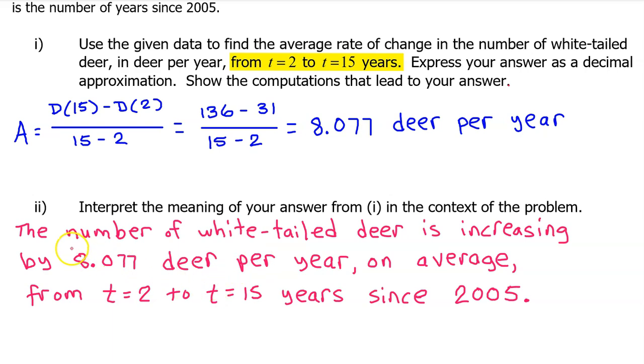Putting it all together, the number of white-tailed deer is increasing by 8.077 deer per year on average from t equals 2 to t equals 15 years since 2005.